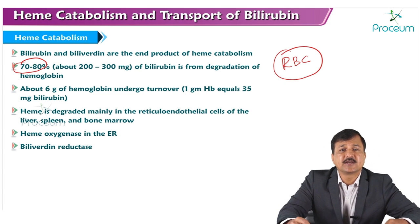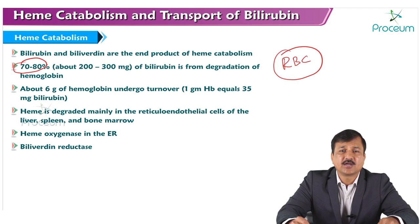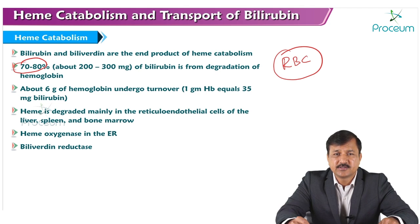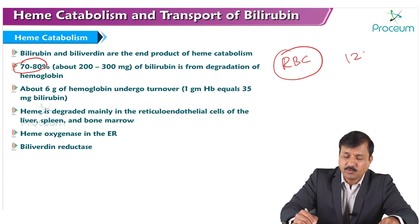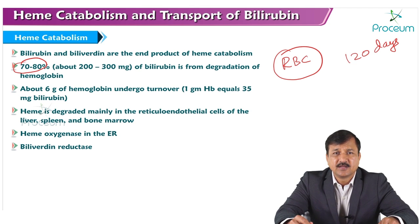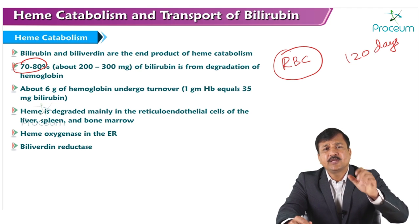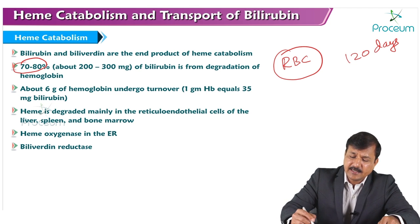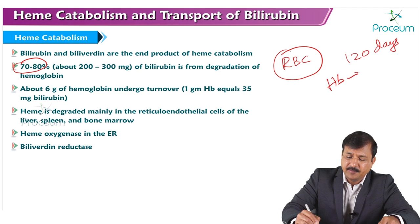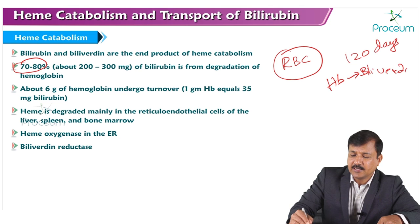As you all know, red blood cells contain hemoglobin — one red blood cell has around 300 million hemoglobin molecules. Red blood cells live for 120 days. After those 120 days, old red blood cells break down, especially in the spleen, in the splenic sinusoids. Hemoglobin is released and converted into biliverdin, which is then converted into bilirubin.